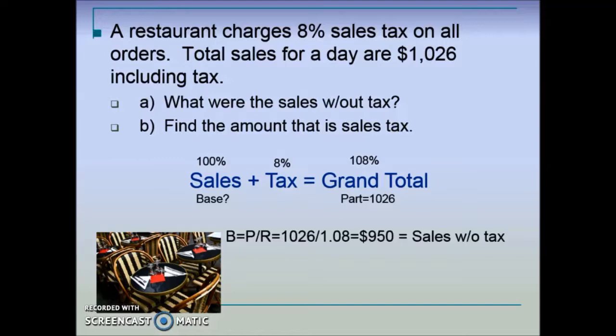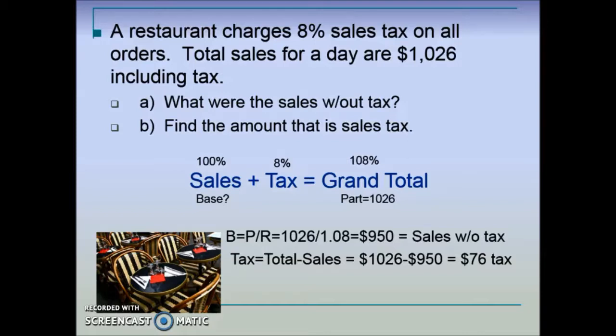Dividing part by rate results in $950 — this is our base, or total sales without tax. To find the sales tax amount, we take the grand total of $1,026 minus our sales of $950, giving us a tax amount of $76.